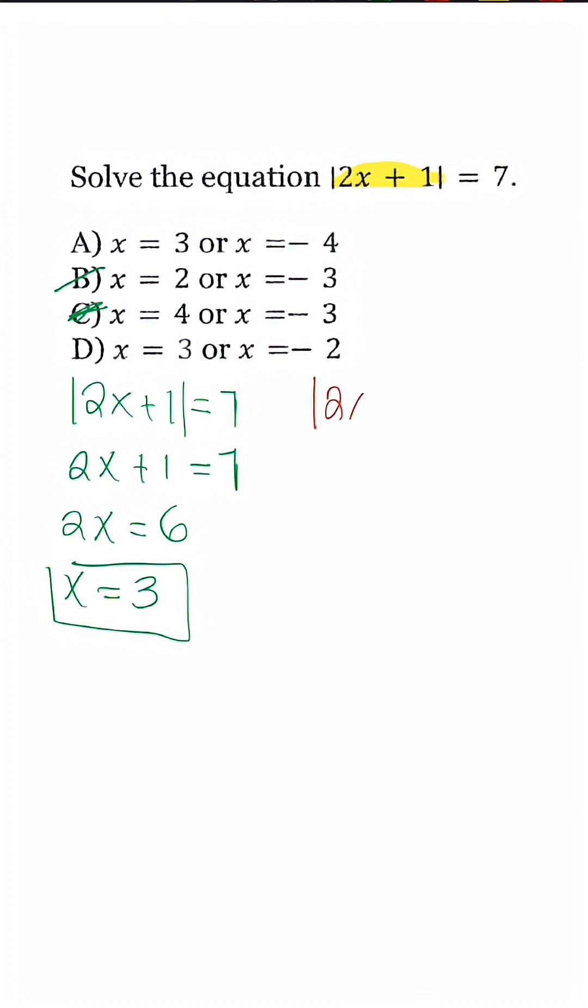Now when we create the second equation, we make 7 negative. When I drop the brackets, we have 2x plus 1 is equal to negative 7. We'll get 2x is equal to negative 8, and my second x is going to be negative 4 once I divide.